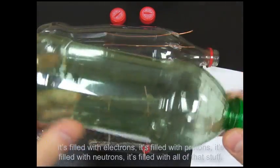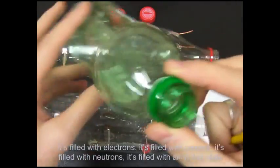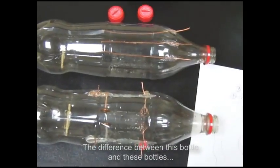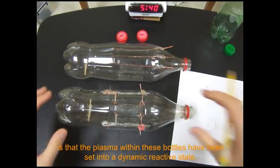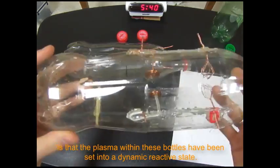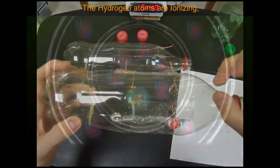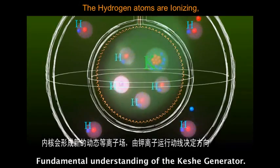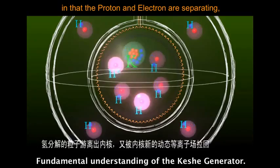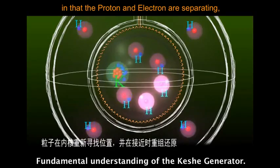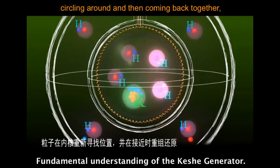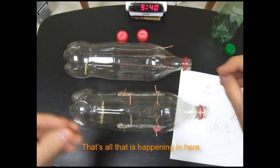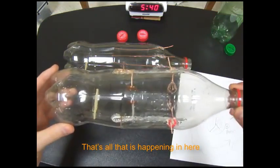So it's filled with electrons, it's filled with protons, it's filled with neutrons, it's filled with all of that stuff. The difference between this bottle and these bottles is that the plasma within these bottles has been set into a dynamic reactive state in that the hydrogen atoms are ionizing in that the proton and the electron are separating, circulating around and then coming back together and then doing that again and then coming back together and then doing that again. That's all that's happening in here.